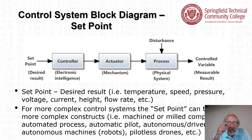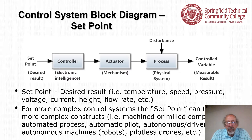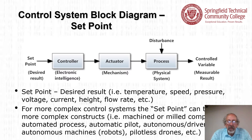Here's a little more detail. The set point is some desired result — maybe a temperature, speed, pressure, voltage, current, height, or flow rate. You might also consider more complex control systems where the set point takes on a more complex construct: a machined or milled component, an automated process, an autopilot, autonomous or driverless cars, autonomous machines such as robots, or a pilotless drone. A simple control system could be one thing, while a more complex control system could provide something like a driverless car.